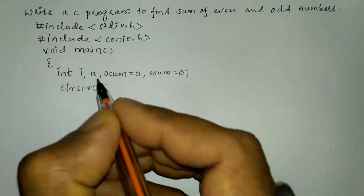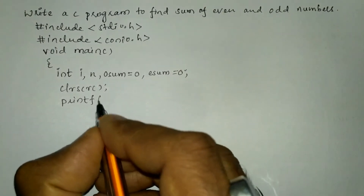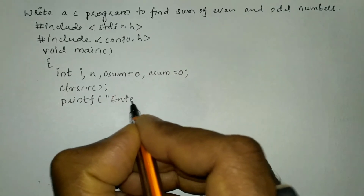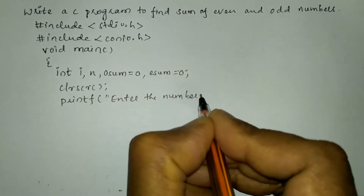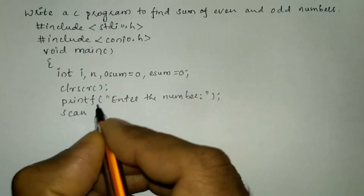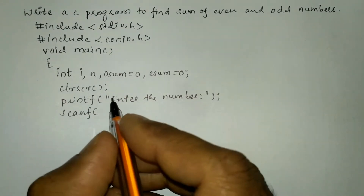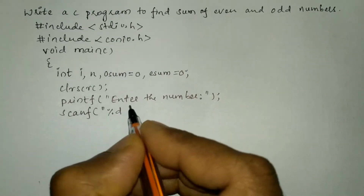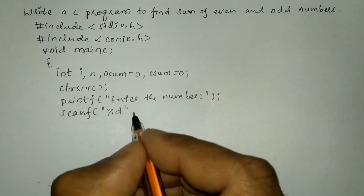Now I am going to write the clrscr function. We will ask the user to enter the number using a printf function — in double quotation marks I will write 'Enter the number'. Now we are going to receive the value for n using the scanf function from the user through the keyboard, with the format specifier %d associated with integer type data.